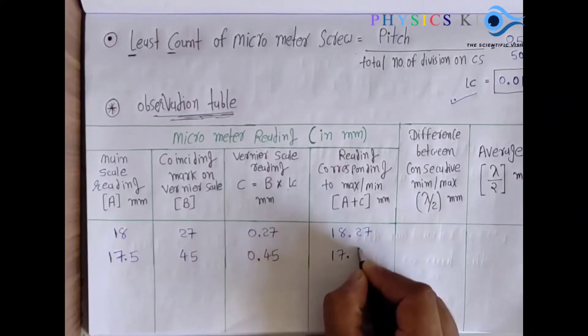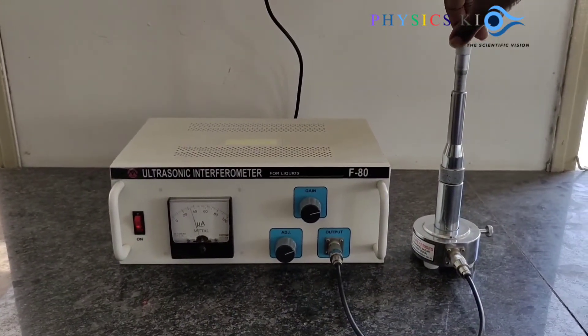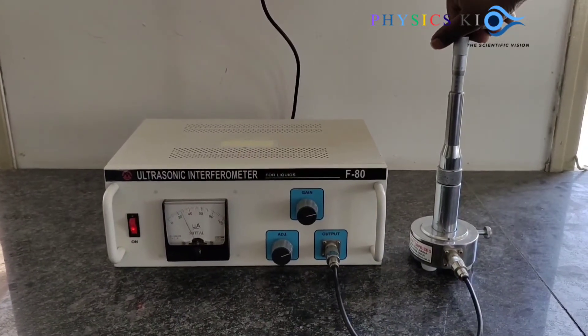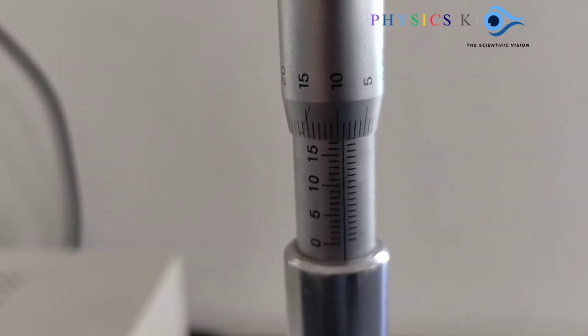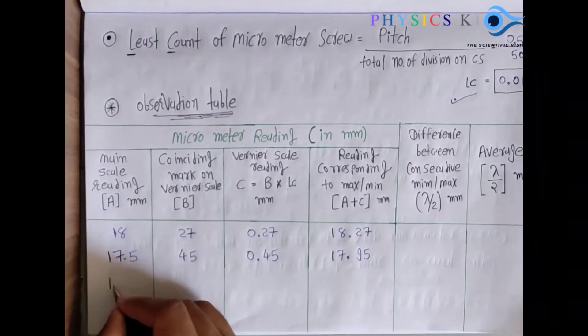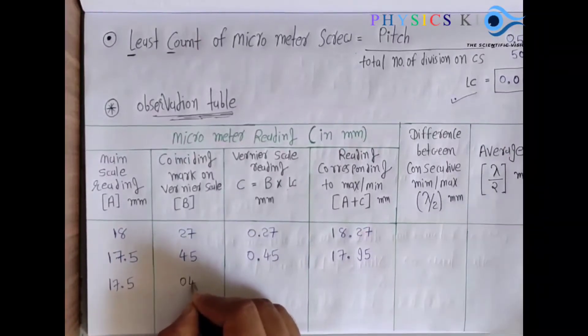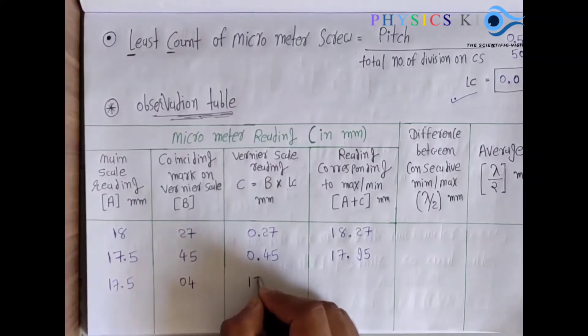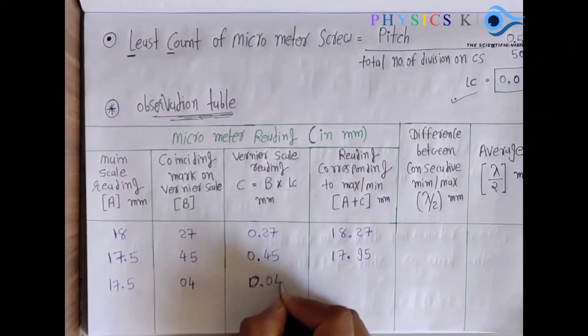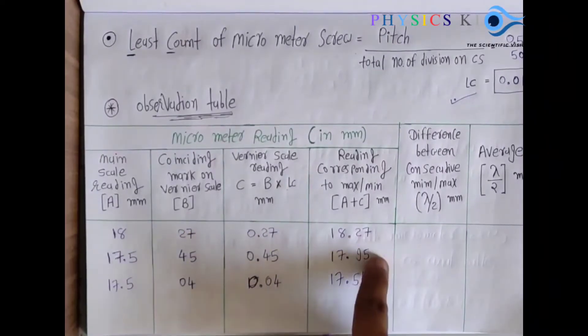Again turn the top circular scale up to one deflection — going, going — now it comes back. Check the reading: main scale is 17.5 mm and the coinciding number this time is 4. Multiply with LC: 4 × 0.01 = 0.04 mm. Add: 17.5 + 0.04 = 17.54 mm. You can take more readings but for the result these are sufficient.